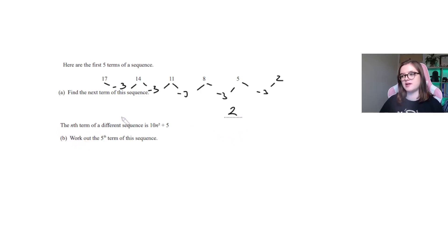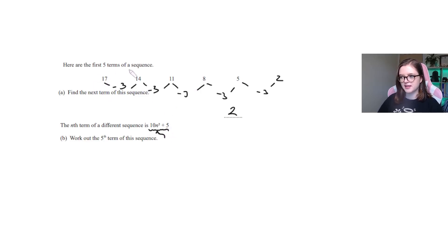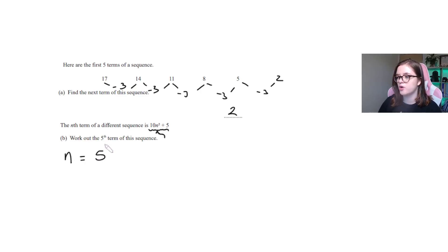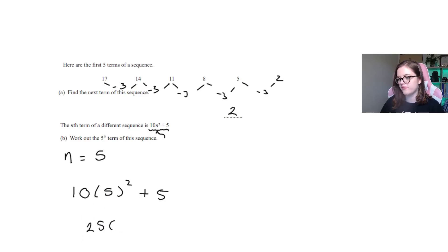The nth term of a different sequence is 10n² + 5. This nth term tells you what's happening term by term — n is the number of the term you're looking at. They want us to find the fifth term, so we put n = 5: 10 lots of 5 squared plus 5. Deal with the bracket first — 5 squared is 25, times 10 is 250, plus 5, that is 255. That's your answer.